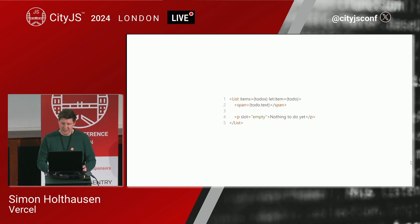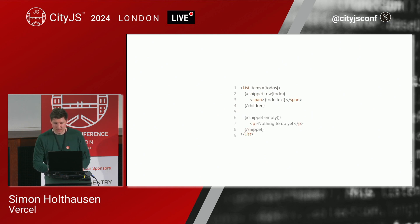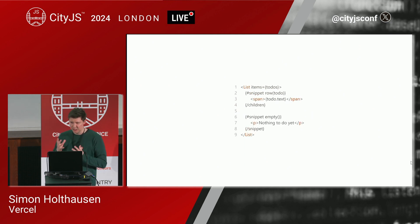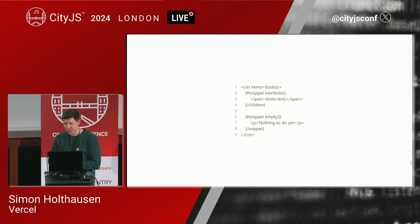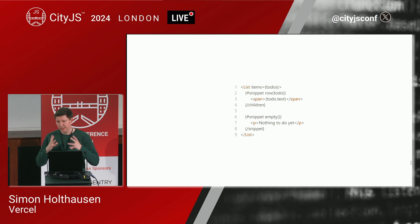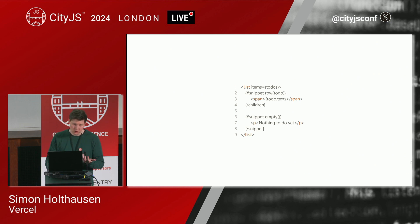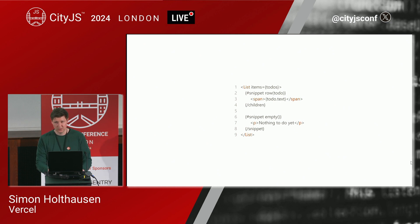Thankfully, we can replace these slots with snippets. Because snippets are just variables at the end of the day, we can pass them around as properties as well. The list now takes three properties: items, a row property, and an empty property, where row and empty are expected to be snippets. As syntax sugar, snippets defined directly within the component are implicitly passed as properties to that component. The resulting code is more readable, all while again reducing the number of concepts to learn.